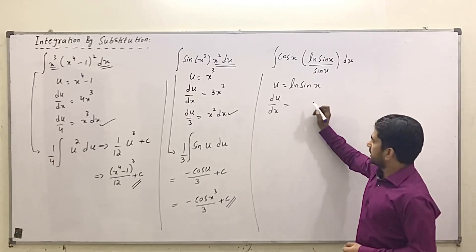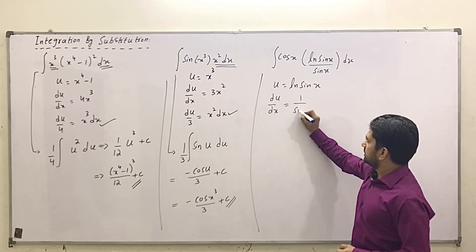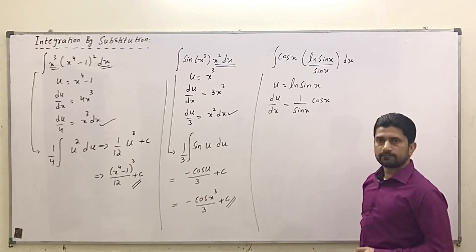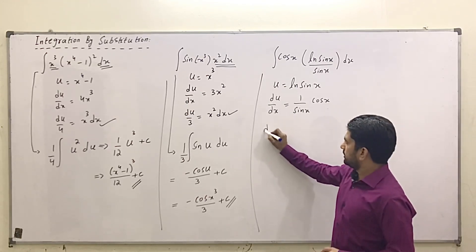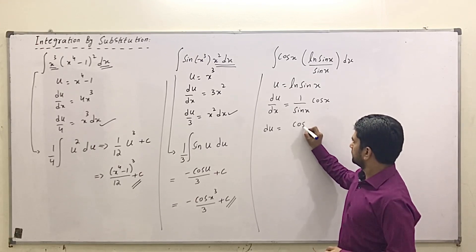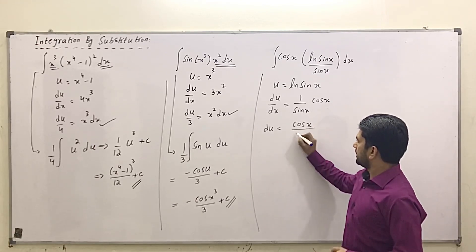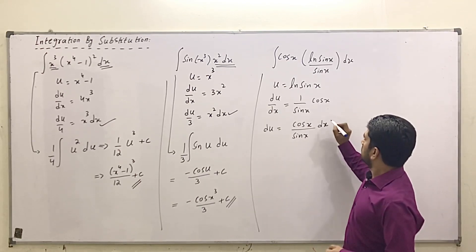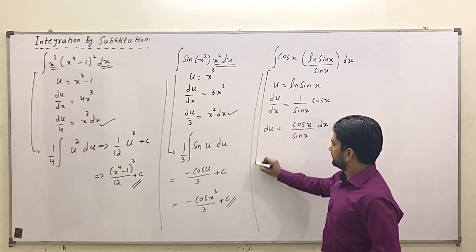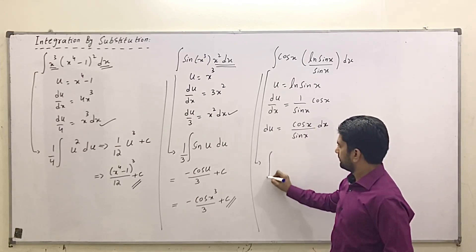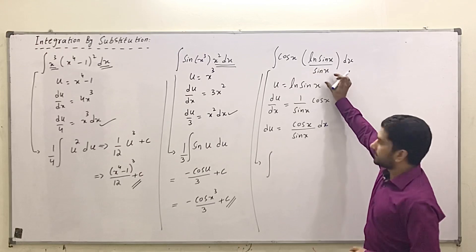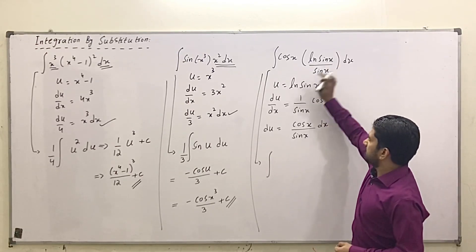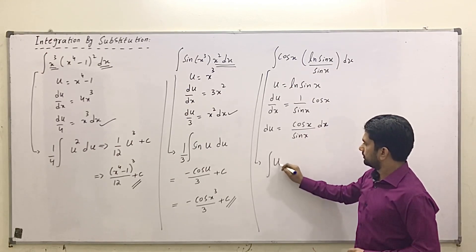The derivative of ln(sin x) is 1/sin(x) multiplied by cos(x). So du = cos(x)/sin(x) dx. This expression cos(x)/sin(x) dx is exactly our du, and ln(sin x) is our u.